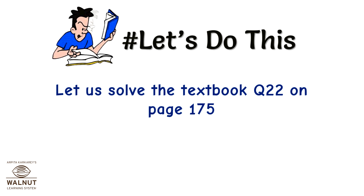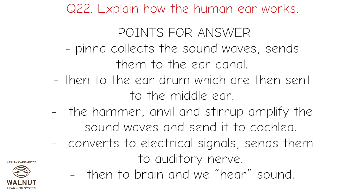Let us solve textbook question 22 on page 175: Explain how the human ear works. Here are the points for the answer: The pinna collects the sound waves and sends them to the ear canal, then to the eardrum. The hammer, anvil, and stirrup amplify the sound waves and send them to the cochlea, which converts them into electrical signals. The signals are sent through the auditory nerve to the brain, and we hear sound.